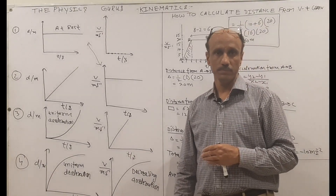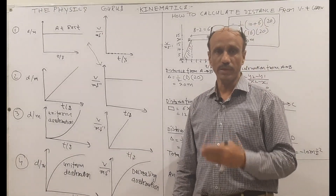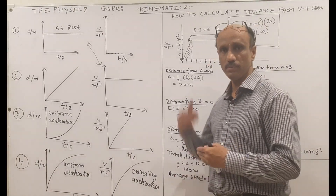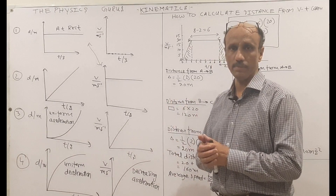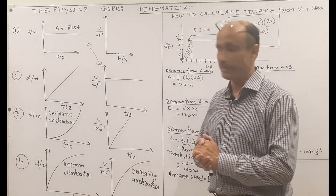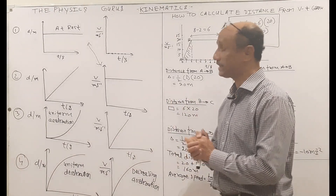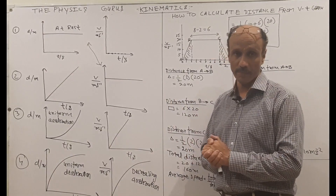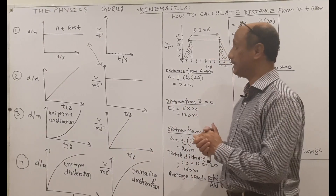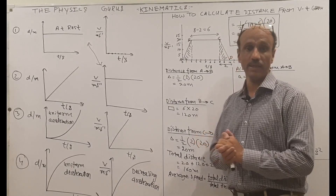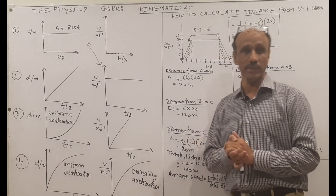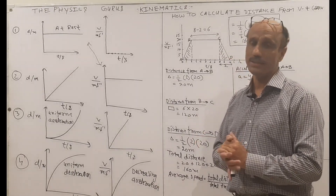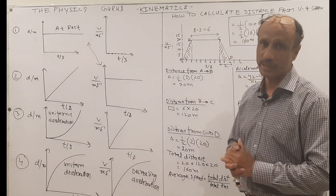We will continue our previous topic. Now we will do the comparison of the distance-time graph and the velocity-time graph, and then we will discuss how we can calculate the distance from a speed-time or VT graph.